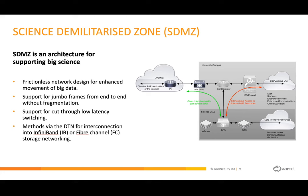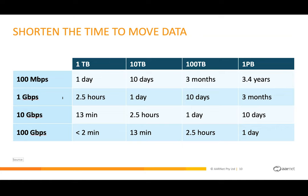Some examples of the time it takes to move data — you can see the different data rates on the left and data sizes on the right. With large amounts like 100 terabytes or a petabyte at 100 megabits or 1 gigabit, it takes a significant amount of time — 10 days or 3 months. Getting up into the 10 or 100 gigabits range gives you more reasonable timelines. These are theoretical maxima; you won't reach them exactly, but they're a guideline. 3.4 years versus a day — I'll take the day every time.